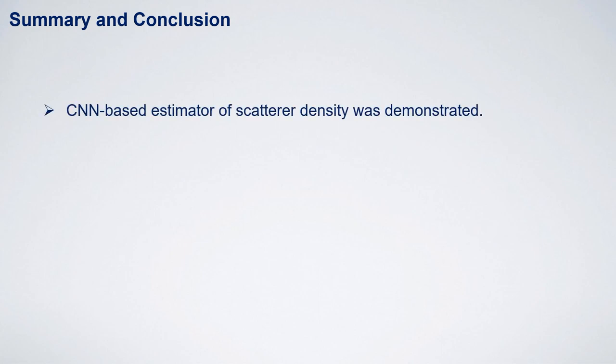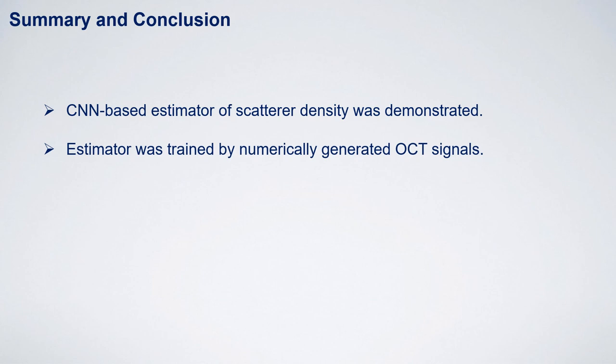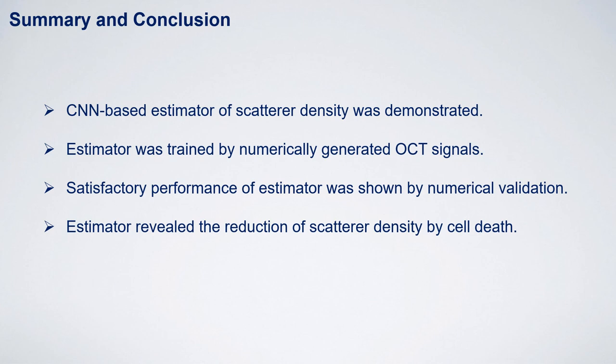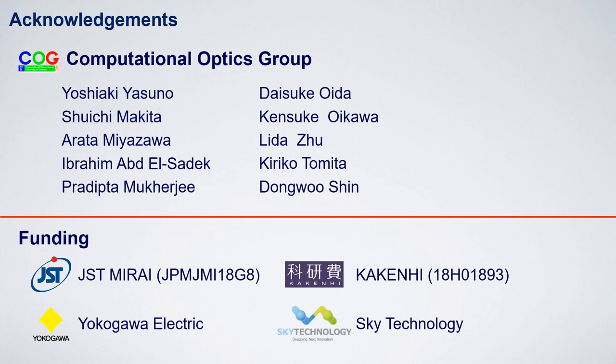Let me conclude my talk. We demonstrated a CNN-based scatterer density estimator. This estimator analyzes the spatial pattern of OCT speckle and estimates scatterer density. The CNN-based estimator was trained using fully numerically generated OCT signals, so we do not need any experimental dataset to train the estimator. Numerical validation showed that the estimator has satisfactory performance. In addition, the estimator was applied to experimentally obtained OCT images of a tumor spheroid and revealed scatterer density decrease due to cell death. I would like to thank my colleagues in the computational optics group and also the audience. Thank you for your attention.